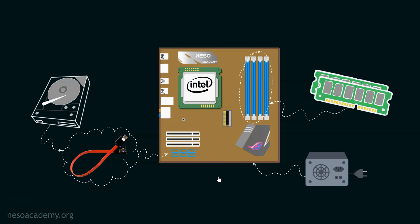The reason engineers call it a microprocessor is that over the various generations of computers, the size of the processor decreased drastically — hence the name microprocessor. Now, the reason it was hiding underneath the heat sink is that during execution, the microprocessor gets very heated, so in order to keep it cool, we need the heat sink.